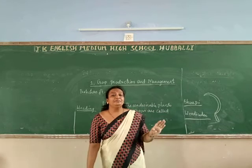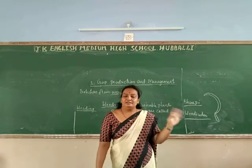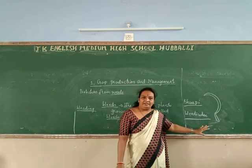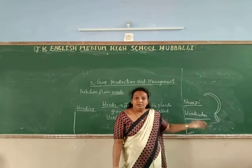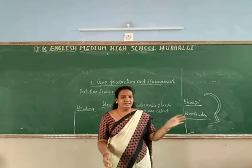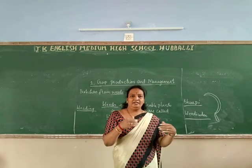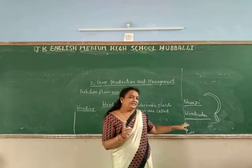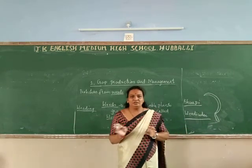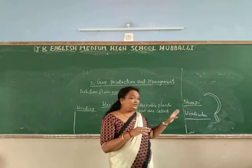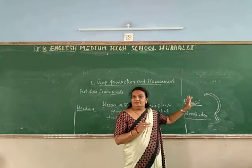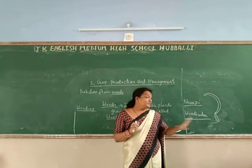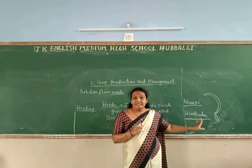When you spray weedicides, they will not destroy any crops — only the weeds will die. They dilute this chemical in water and spray it onto the field, and the crops will not be destroyed, only the weeds. So it is not harmful to the crops. So, one method is the kurpi, and another is the weedicide.